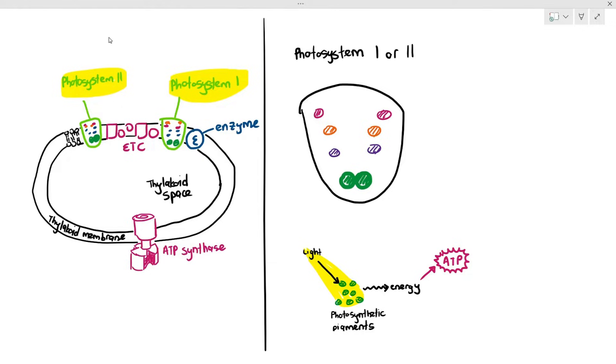But as you can see here, there are many different colored pigments. You can see maroon, orange, purple, and green pigments. You don't have to memorize the colors by the way. But the point I'm trying to make here is there are many different types of pigments in the photosystem.